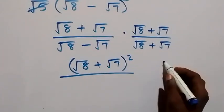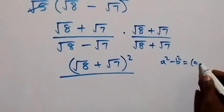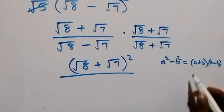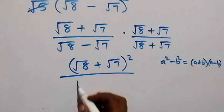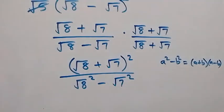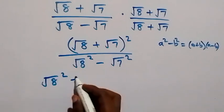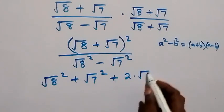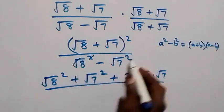You know, for a squared minus b squared, this is simply a plus b multiplied by a minus b. Since the denominator follows this pattern, a here is root 8 and b is root 7. So the denominator becomes root 8 squared minus root 7 squared, which is 8 minus 7 equals 1. The numerator expands as root 8 squared plus root 7 squared plus 2 times root 8 times root 7.